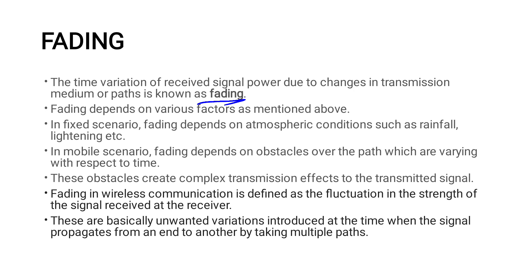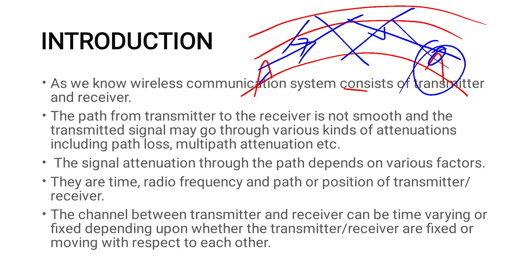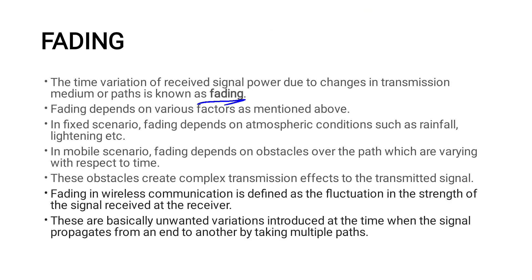In the receiver, the signal is different. In different periods of time it is different — the signal has interference due to upnobalities, refraction, ionosphere, and refractive index changes and variations. What we call the time variation of the receiver signal power due to changes in the transmission medium or path is known as fading.